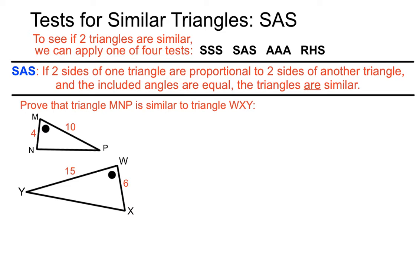We're asked to prove that triangle MNP is similar to triangle WXY. We've got the diagram down here. We've got a couple of sides on each triangle and a marking indicating that those angles are the same size as each other on the two triangles. Let's piece together enough information here to see if it passes the SAS test.